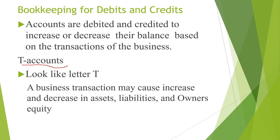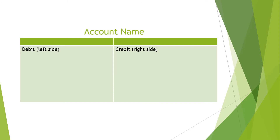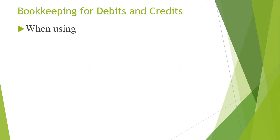You put the account name at the top — the account that is being affected, whether it's an asset account or liability account. The debit side is always the left side and the credit side is the right side. A transaction may cause that account to either decrease or increase, leading to a debit or credit recording.